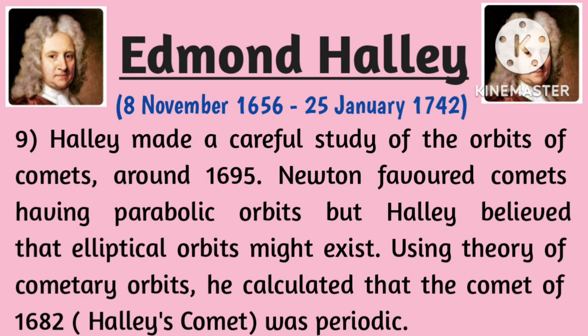Halley made a careful study of the orbits of comets around 1695. Newton favored comets having parabolic orbits, but Halley believed that elliptical orbits might exist. Using his theory of cometary orbits, he calculated that the comet of 1682 was periodic.